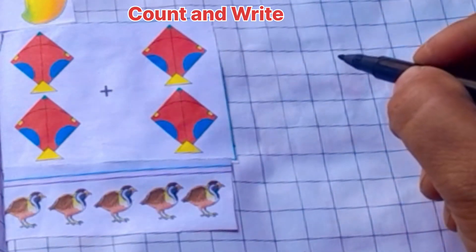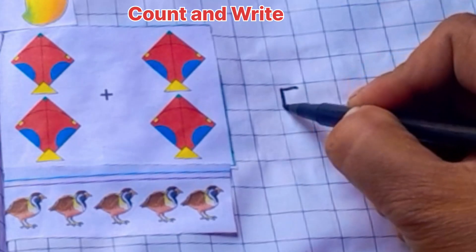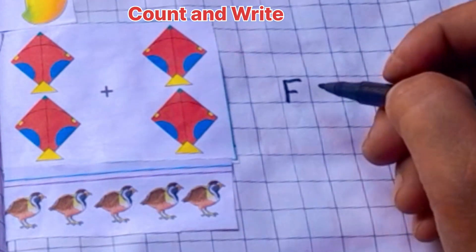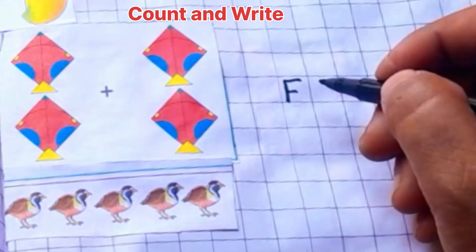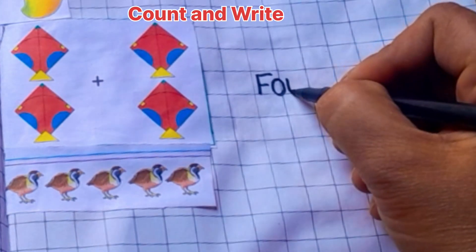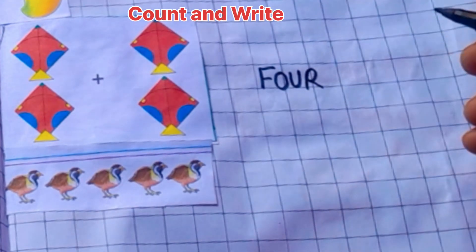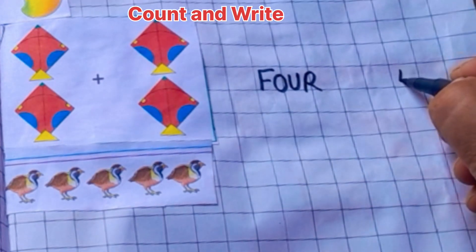One, two, three, four. Four. F, O, U, R. Four kites.